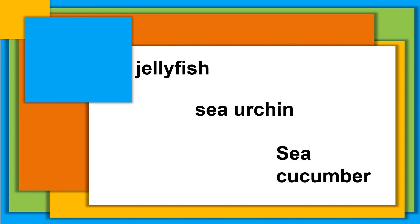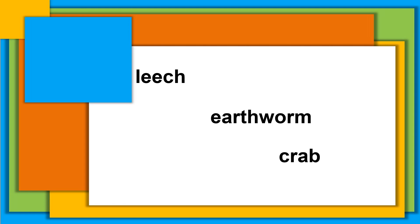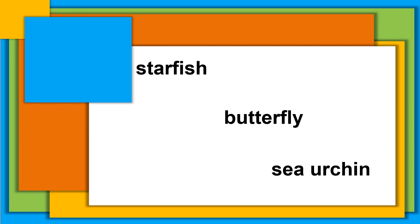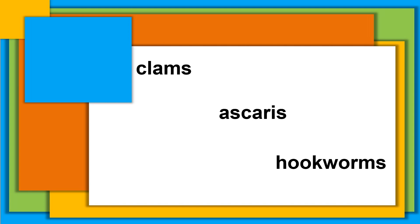Second group: jellyfish, sea urchin, sea cucumber. Third group: leech, earthworm, crab. Fourth group: starfish, butterfly, sea urchin. And number five: clams, Ascaris, hookworms.